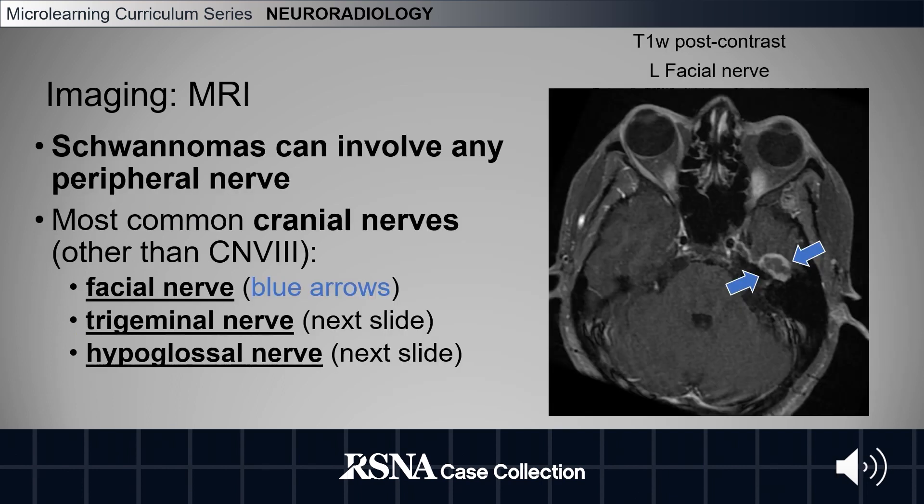Schwannomas can involve any peripheral nerve. Other than cranial nerve eight, the most common cranial nerves involved include the facial nerve, as shown by the blue arrows in the image on the right, the trigeminal nerve, and the hypoglossal nerve, both of which will be shown on the next slide.